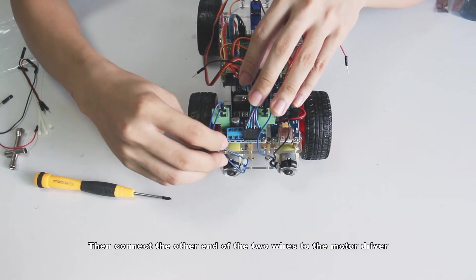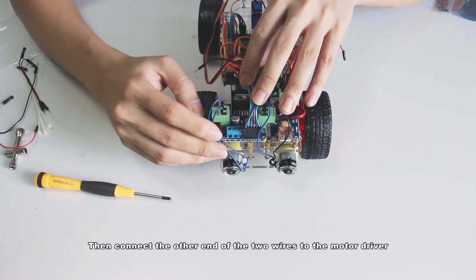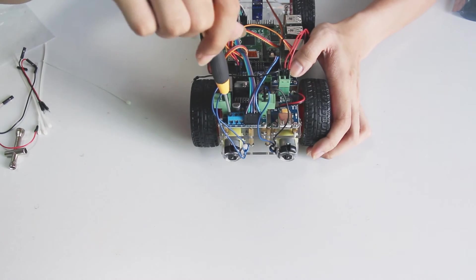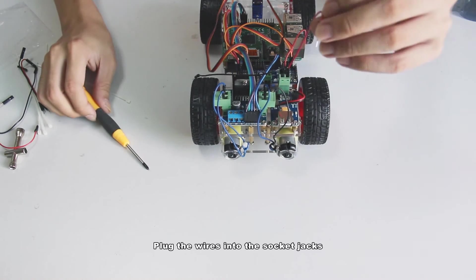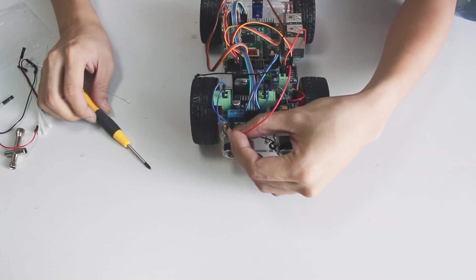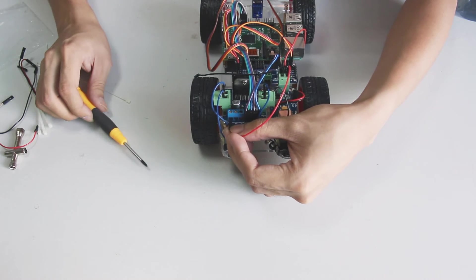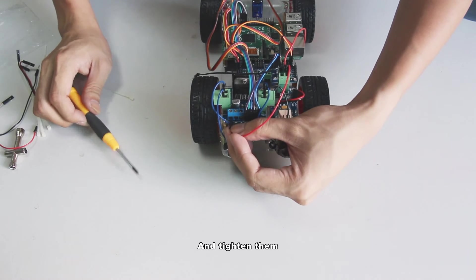Then connect the other end of the two wires to the motor driver. Loosen the screws first. Plug the wires into the socket jacks. And tighten them.